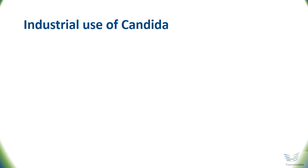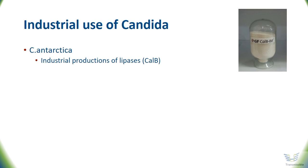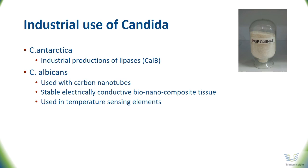There are also some Candida that have an industrial use. Candida antarctica is a source of industrially important lipases. The Cal-B lipase is one of the most widely used biocatalysts in organic synthesis on both laboratory and commercial scale. Candida albicans has been used in combination with carbon nanotubes to produce stable electrical conductive bio-nanocomposite tissue materials that have been used as a temperature sensing element.